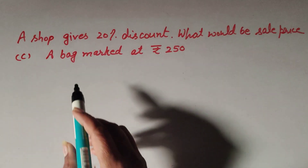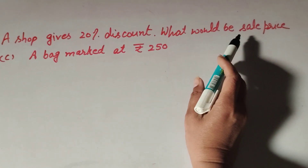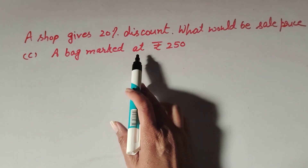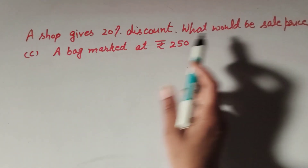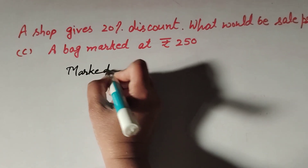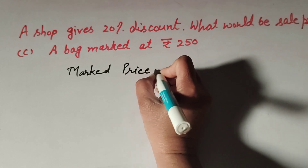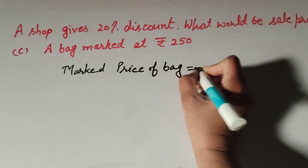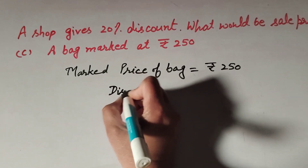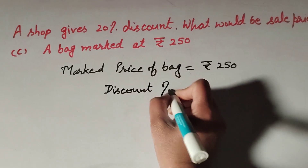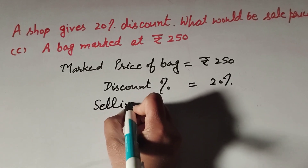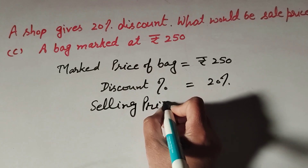Now we move to Part C: a shop gives 20 percent discount — what would be the sale price of a bag marked at rupees 250? Marked price of bag is rupees 250 and discount percentage is 20 percent. We need to find the selling price of the bag.